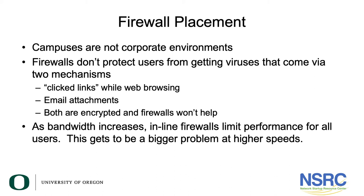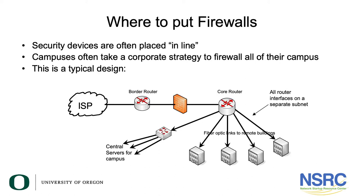As your bandwidth increases — going from 10 megs to 100 to 1,000, and maybe even as many as 10 gigabit external connections — firewalls have trouble scaling up to those kinds of speeds. So we want you to think about an alternative strategy. Since firewalls don't protect users from viruses, and with border firewall placement they can't protect users from each other, we need a different approach.